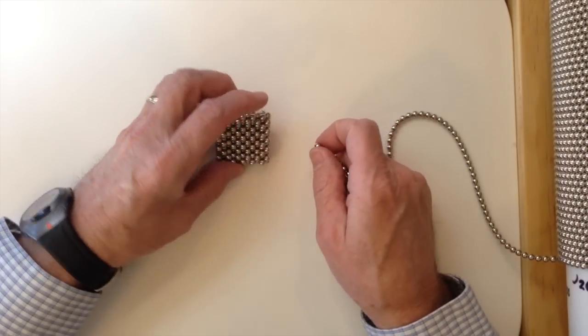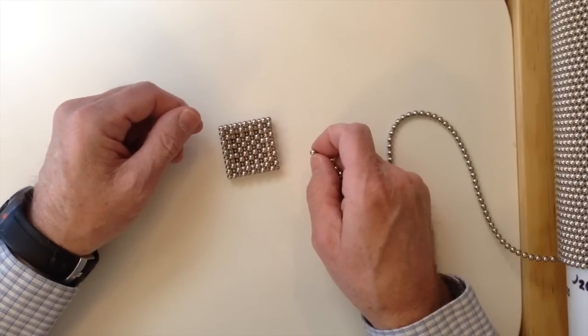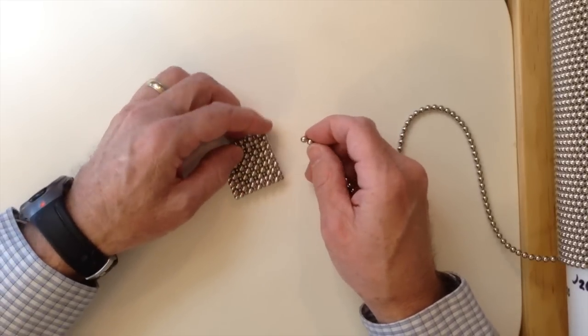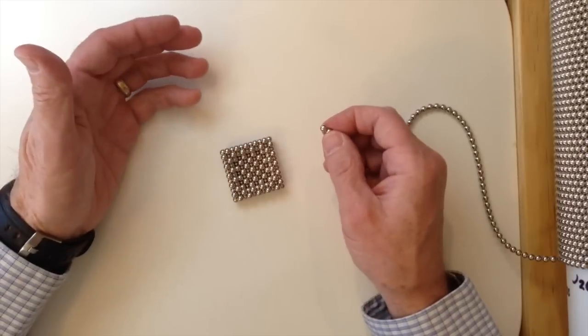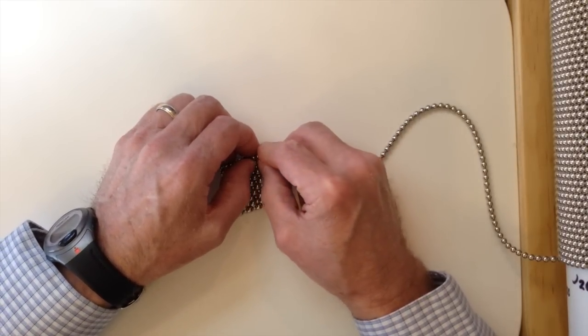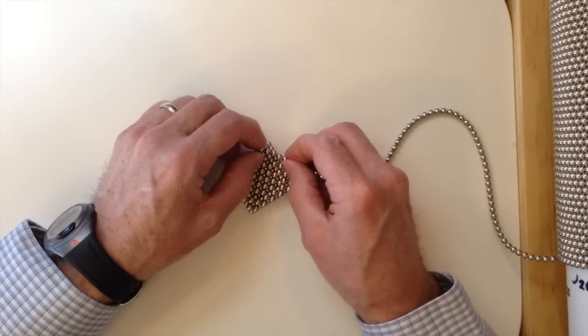And then to start building the walls, we're going to do a zigzag pattern in the walls themselves. We'll just add one layer at a time. Cross like that.